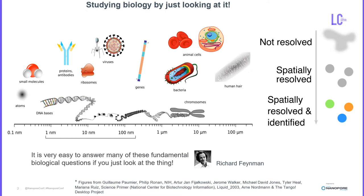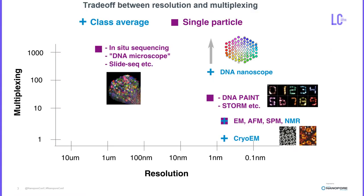The study of biological systems at the nanoscale level is not only interesting but also rather complex, requiring sophisticated instruments for visualization. However, there is a trade-off between resolution and the number of targets that can be visualized. Here we present a novel biochemical technique we term the DNA nanoscope, that not only identifies many targets but also provides a nanoscale resolution spatial map of the targets.